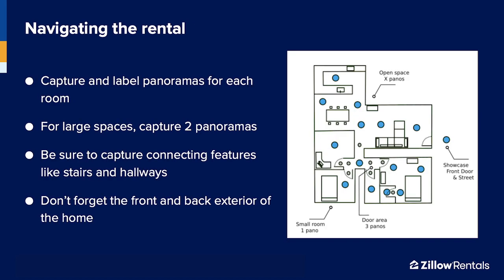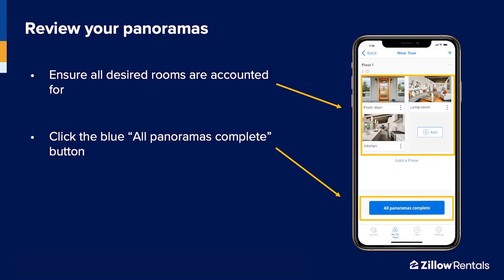Here are a few tips to keep in mind as you navigate your rental property. Capture and label panoramas for each room. For larger spaces, capture two panoramas. Be sure to capture connecting features like stairs and hallways, and don't forget the front and back exterior of the property. To give you a rough time estimate, capturing a 2,000-square-foot property would take about 30 minutes. Once your shoot is complete, review your panoramas and retake any blurry captures. Tap 'all panoramas complete' once you have all the panoramas you want and are ready to leave the property. Make sure you're done, as you won't be able to add any additional rooms or panoramas after this.